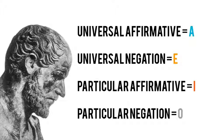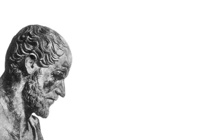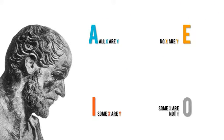So, a universal affirmative would be something like all X are Y, and a universal negation would be no X are Y, and a particular affirmative would be some X are Y, and a particular negation would be some X are not Y. Got it?